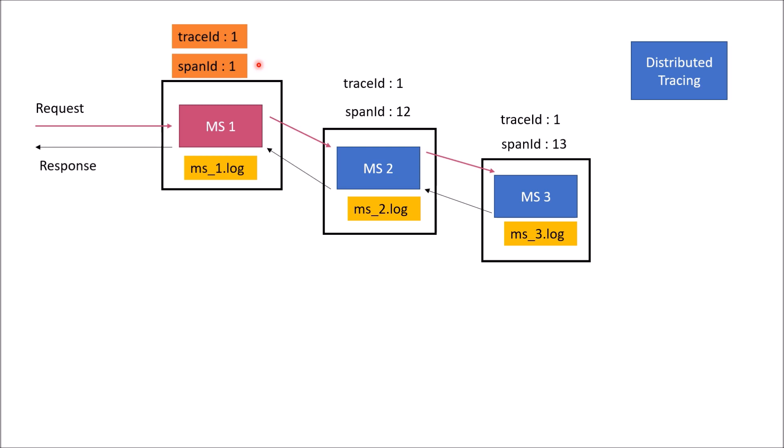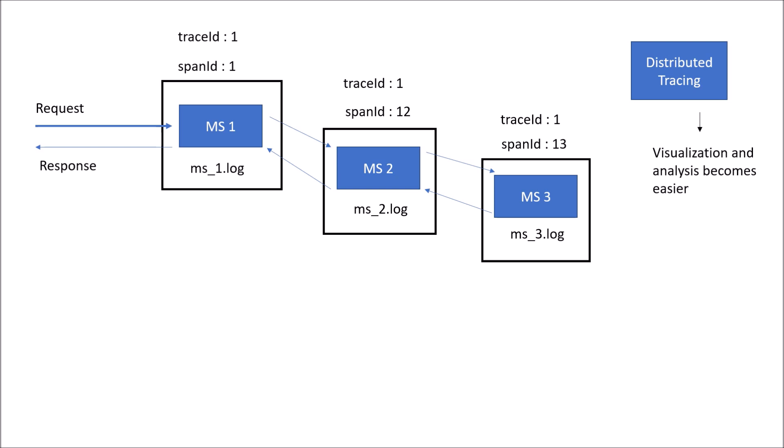Distributed tracing gives you two unique IDs — trace ID and span ID — and these IDs are passed in the request headers and the response, so that you would be able to monitor and visualize a single request spanning multiple microservices. The benefit of this distributed tracing is that visualization and analysis becomes easier.